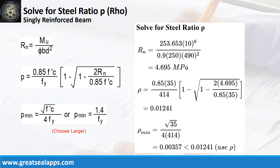Given maximum moment equals 253.653 kN per meter, resistance factor equals 0.9, b equals 250 mm, and d equals 490 mm. The beam design ratio RN equals 4.695 MPa, and reinforcement ratio ρ equals 0.01241.